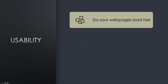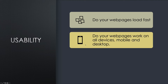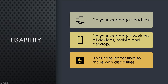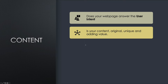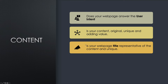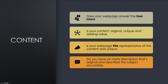Overview of usability: do your web pages load fast? Do your web pages work on all devices — mobile phone and desktop up to an 8K television? Is your site accessible to those with disabilities? For content, the quick overview: does your web page meet or answer user intent? Is your content original, unique and adding value? Is your web page title representative of the content and unique? Do you have a meta description that's original and describes the subject accurately?